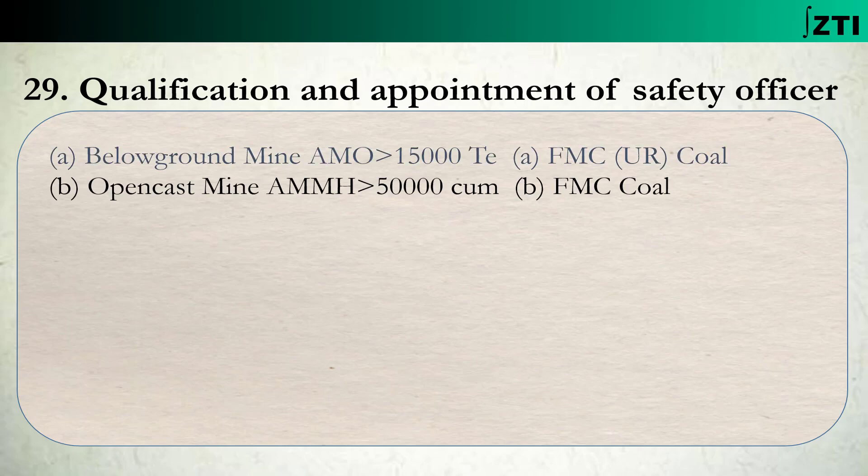Second point B: agar open cast mine mein average monthly material handled 50,000 cubic meter se zyada ho, toh wahan koi bhi first class manager coal wala safety officer appoint kiya ja sakta hai. Aur yahan main repeat kar raha hoon: agar sirf first class manager certificate likha hai kahin par bhi, toh iska seedha matlab hai ki restricted ya unrestricted ki baat nahi hai, koi bhi first class certificate valid hai. Lekin jahan especially likha ho ki first class certificate not restricted to open cast only, then only wahan not restricted certificate hi valid hoga.